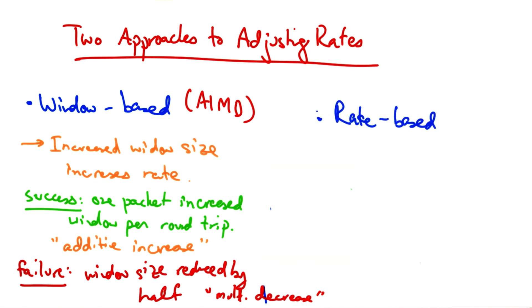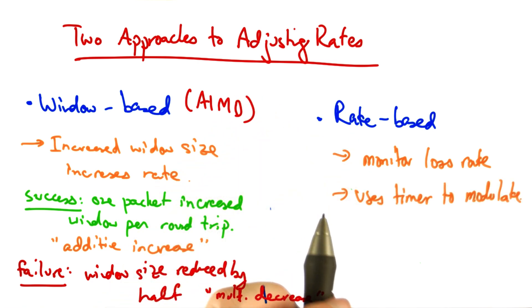The other approach to adjusting rates is an explicit rate-based congestion control algorithm. In this case, the sender monitors the loss rate and uses a timer to modulate the transmission rate.